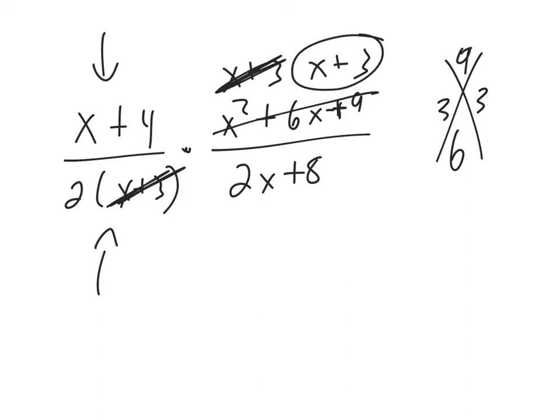And then I can factor a 2 out of this and be left with (x plus 4), right? If I divide each of those by 2, that's what I'd have. So I'm going to cross him out. And now this (x plus 4) will cancel, won't it?